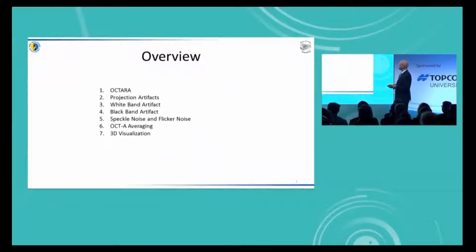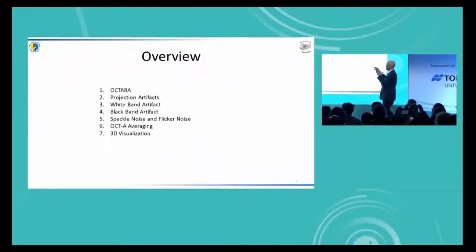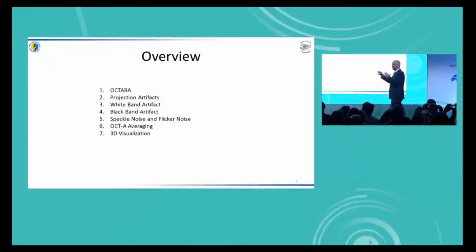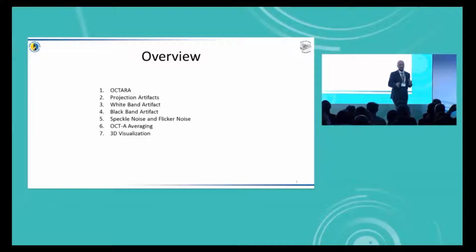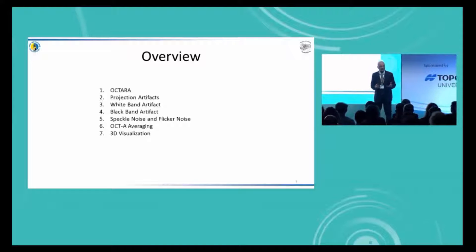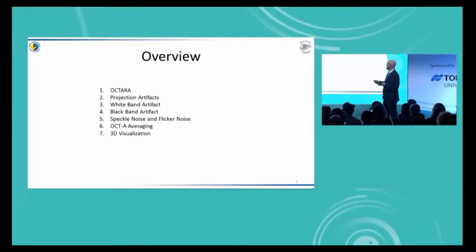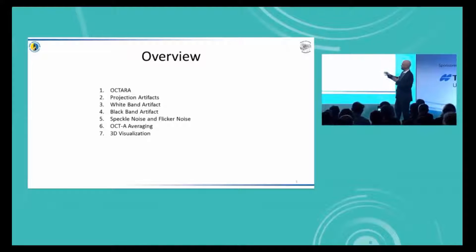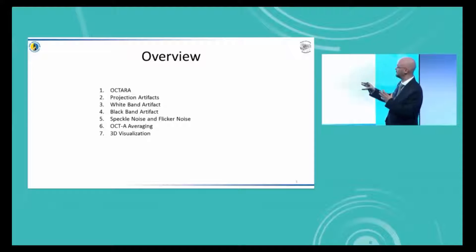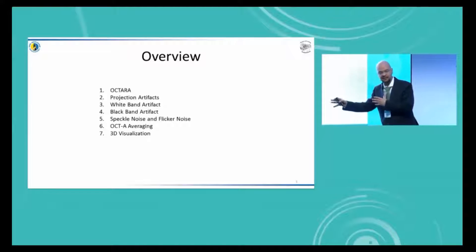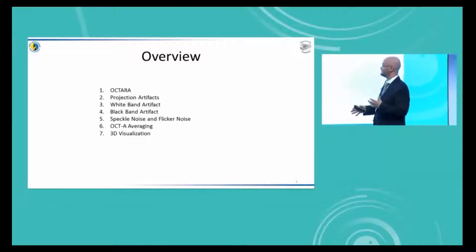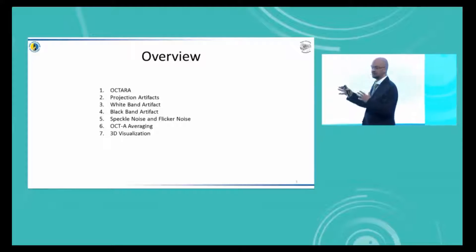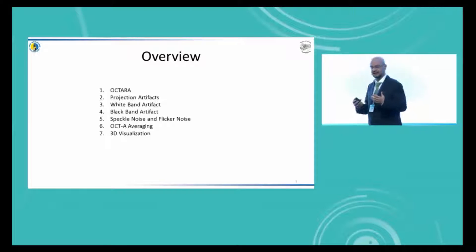I'm going to begin by talking about what is OCTA — what is the OCT angiography mechanism we're using to get the angiography. Then I'm going to talk about what are the projection artifacts, what are the white band artifacts, what are the black band artifacts, what is speckle noise and flicker noise. And then we'll talk about OCT averaging and doing 3D visualization in order to get a better image.